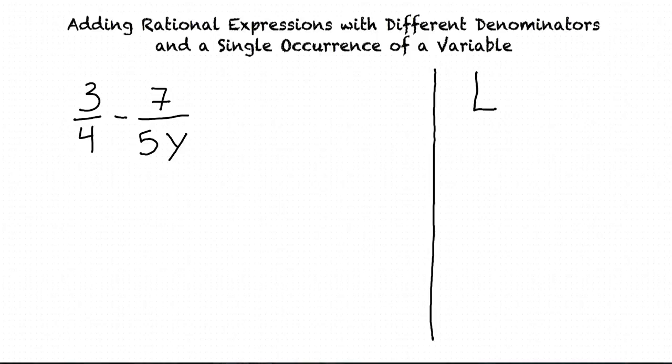To find the least common multiple, or LCM, of 4 and 5y, let's first find the least common multiple of our constants, 4 and 5, and then the least common multiple of our variables, and then we'll multiply those two least common multiples.